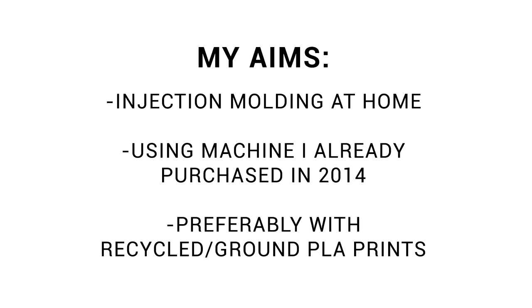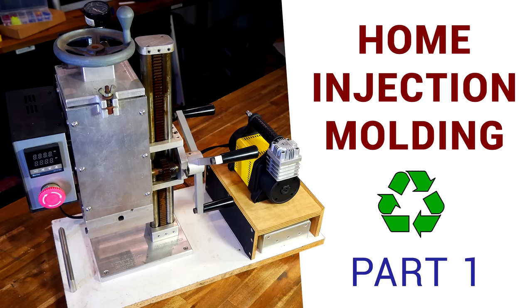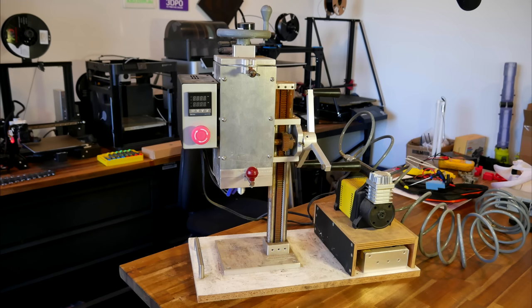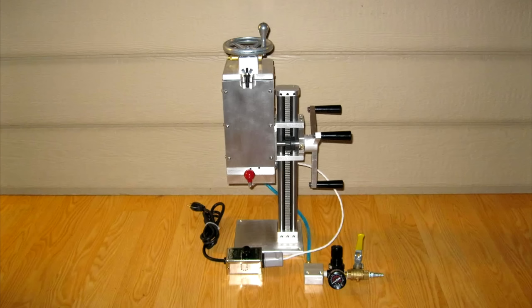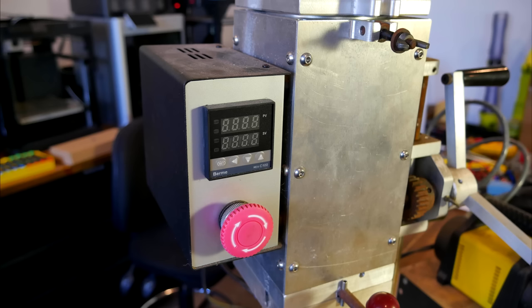In the first video of this series, which I linked in the description, I went over my machine, comparing the modifications I had made to the stock form, including things like a PID temperature controller and converting it to run on 220 volts AC.